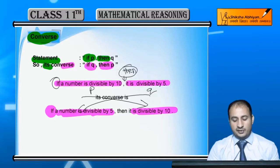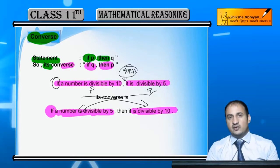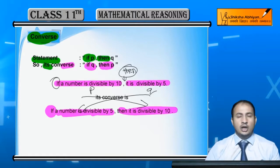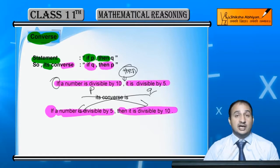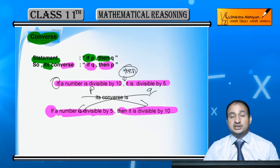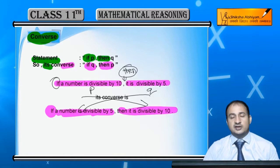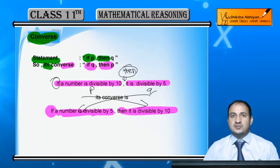When you have a statement with 'if' and 'then', you can write its converse by interchanging the two parts. Let's look at another example.